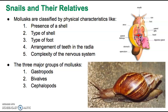The three basic groups of mollusks are called gastropods, bivalves, and cephalopods. These are the names of the phyla. If you don't have this information in your notes, please pause the video and add it so you have it for your open note quiz. The three major phyla of mollusks are gastropods, bivalves, and cephalopods.